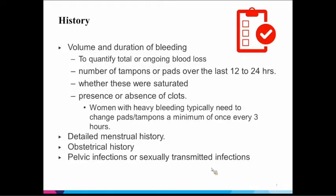On her history and physical, to triage her, we assess the volume and duration of bleeding to quantify total or ongoing blood loss. What's normal for a woman varies — some women bleed very little, some bleed a lot. A large amount of bleeding does not necessarily mean she's in an urgent situation, but it helps triage. Ask how many pads or tampons they've used, whether they were saturated, the presence or absence of clots, and how long this has been going on.